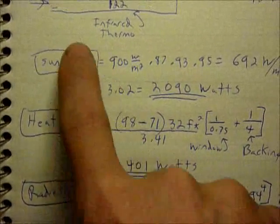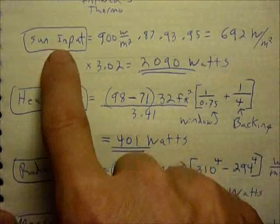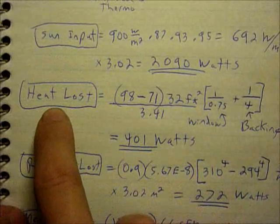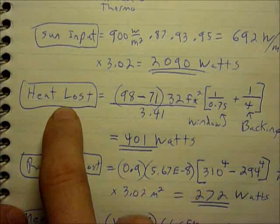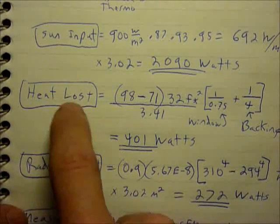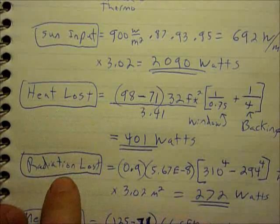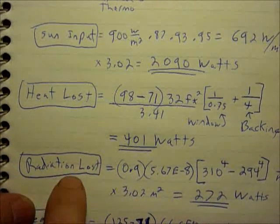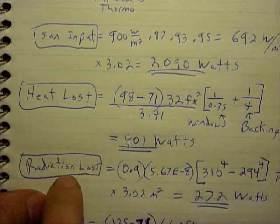So there's energy coming from the Sun, energy lost as heat through convection and conduction through the front and back surfaces and a little bit from the sides, and then there's black body radiation coming off.